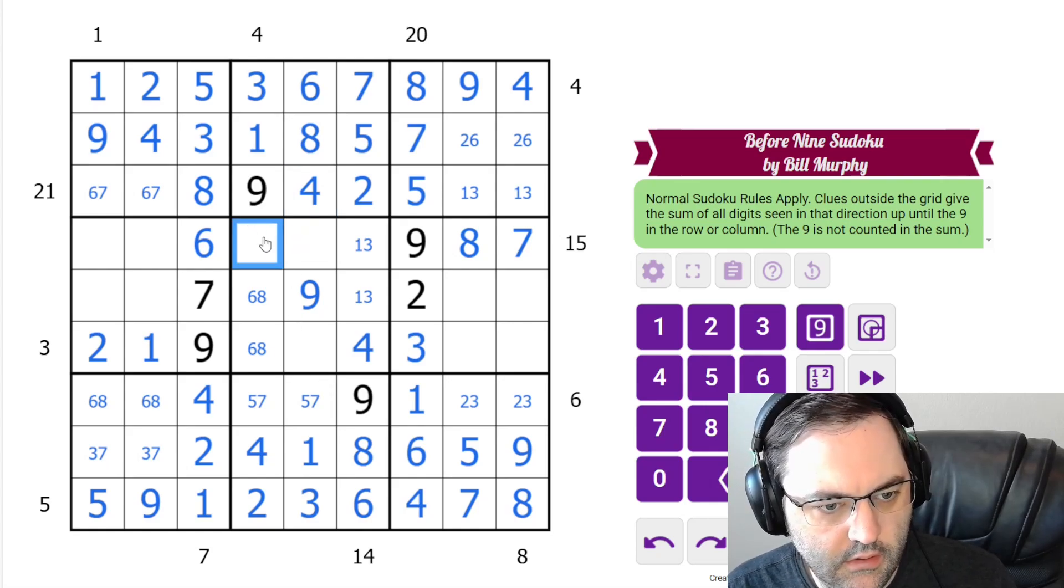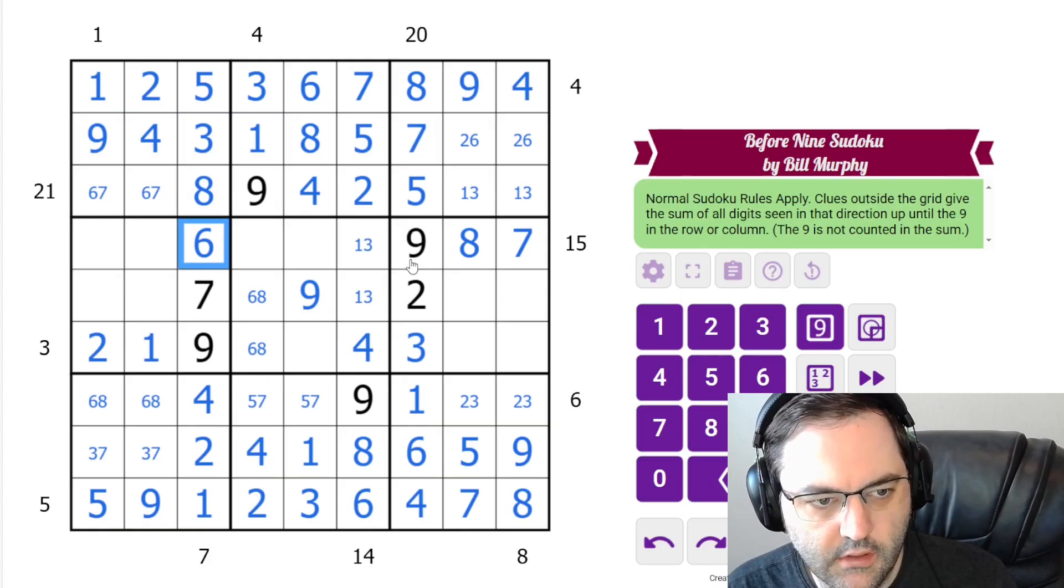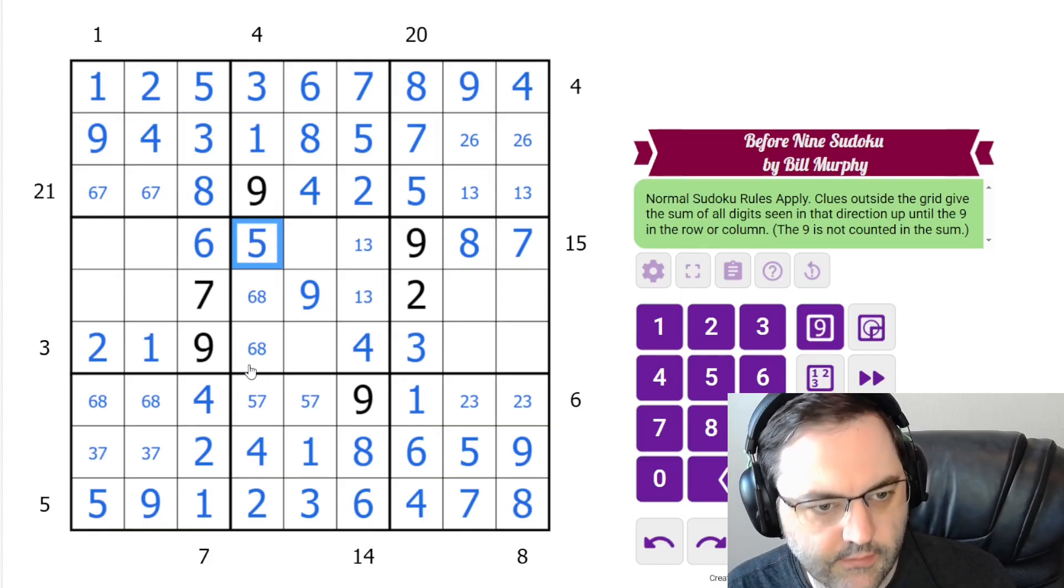And here, in this column, we need 5, 6, 7, 8. I have 6, 7, 8. So this is the 5.